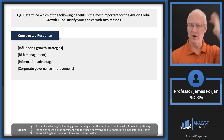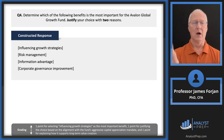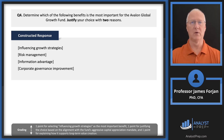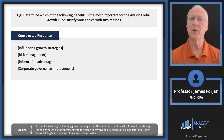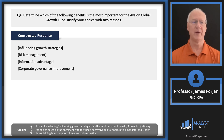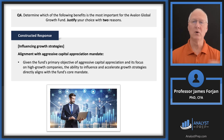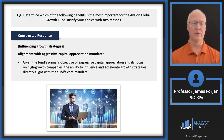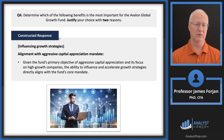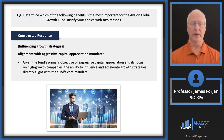Finally, on shareholder engagement: the four choices are influencing growth strategies, risk management, information advantage, and corporate governance improvement. As the fund manager, do we want to actively engage at annual meetings and push growth strategies? All of these are really great choices, but the question is which one is most important. This goes back to the linkage term — if we're in the high-growth tech industry, we want to attend annual meetings and advocate for growth-oriented decisions.